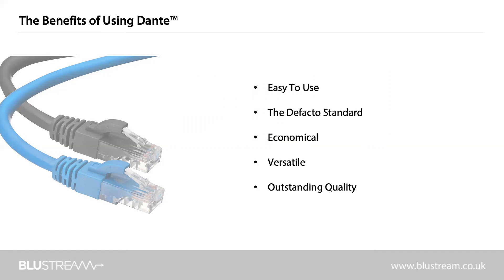It's economical — one cable does it all. Dante uses low-cost, easily available Cat5e, Cat6, or fiber optic cable for a simple, lightweight and economical solution. Dante integrates media and control for your entire system over a single standard network. It's also versatile. Dante systems are highly scalable, from a simple pairing of console to a computer, to complex networks running thousands of audio channels simultaneously.